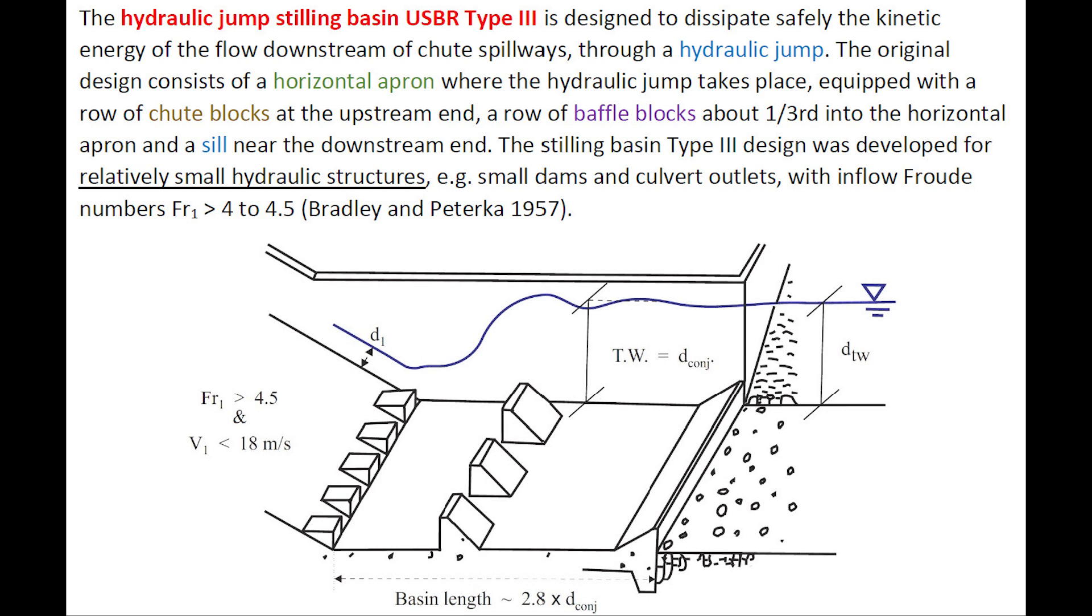The original design consists of a horizontal apron where the hydraulic jump takes place, equipped with a row of chute blocks at the upstream end, a row of baffle blocks about one-third into the horizontal apron,